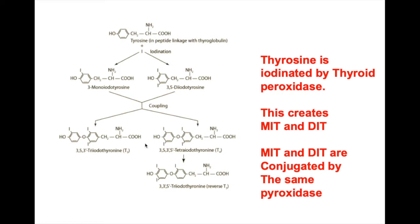T3 has one iodine on the first aromatic group, whereas T4 has four iodines bound to both aromatic groups. You also have reverse T3, where the second aromatic group only has one iodine on it, and this alters their functions.